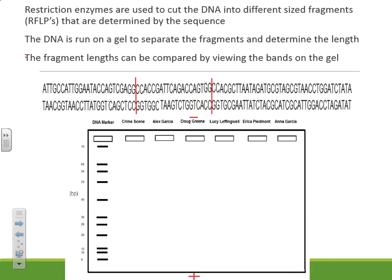Counting the base pairs — here's one base pair, two, three... up to 25 — so this fragment is 25 base pairs long. You can count the base pairs for each segment and figure out where it's going to line up on the gel electrophoresis. We load the DNA into the well, run an electrical current, and it causes the DNA to move down the gel, separating by the size of the fragments.